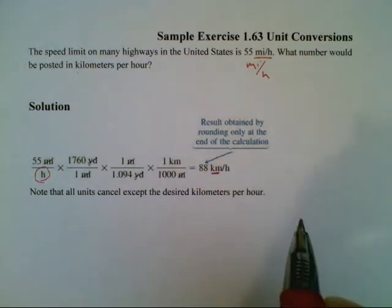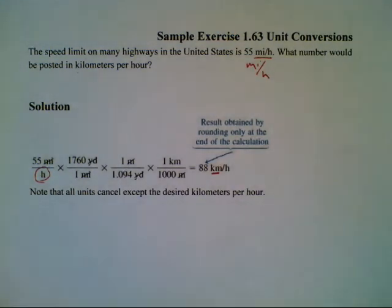Again, we have to know certain conversion factors. For example, for every one mile there are 1,760 yards, 1.094 yards in a meter. Those will get easier and easier to remember as we go, but those are the only facts that you need to know. Aside from that, we're simply using our factor label method.